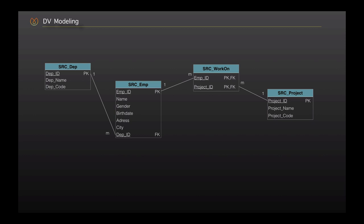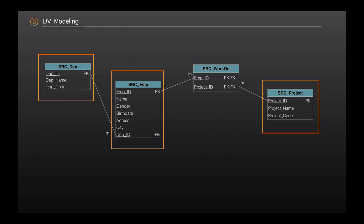In the example, we see a 3NF entity relational model that involves tables giving information about a department in an organization, the employees who work there, and the projects they are enrolled in. We can clearly see that we have three main entities: department, employee, and project, and all of them are converted into physical tables.